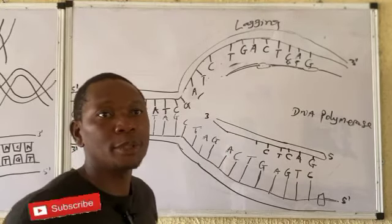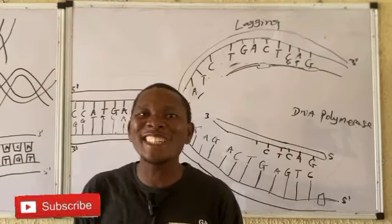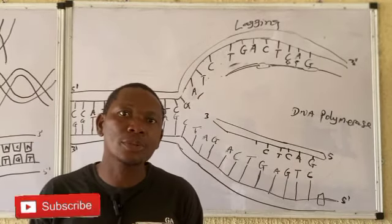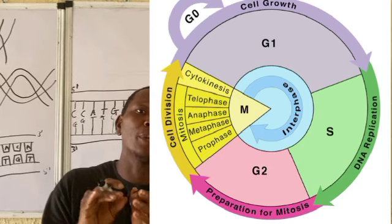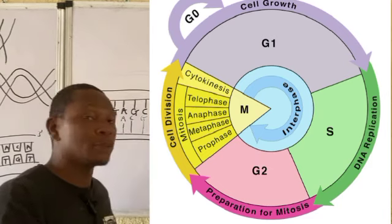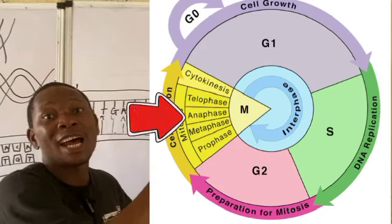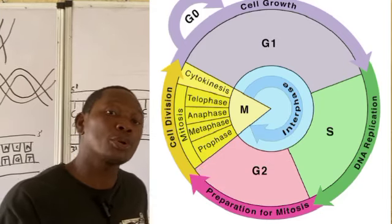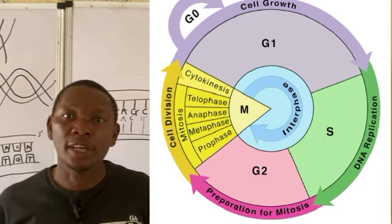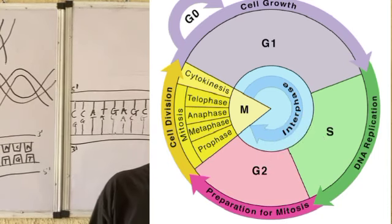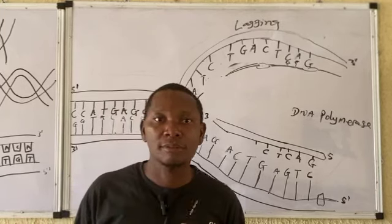This process of DNA replication occurs in the S phase of the cell cycle. The cell cycle includes the G1 phase, S phase, G2 phase, and the cell division phase. This is the end of the video. In our next video, we'll be talking about DNA transcription and translation. Thanks for watching.